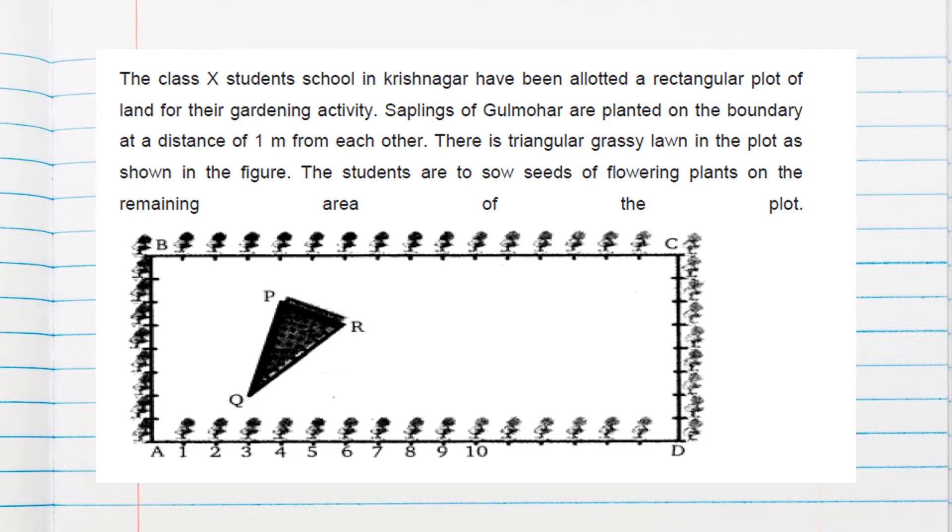You can see here rectangle ABCD is a rectangle. Saplings of gulmohar are planted on the boundary at a distance of 1 meter from each other, means we can consider AD is horizontal axis, that means x-axis, and this is y-axis. There is triangular grassy lawn in the plot as shown in figure. So PQR is a lawn. The students are to sow seeds of flowering plants on the remaining area of the plot.